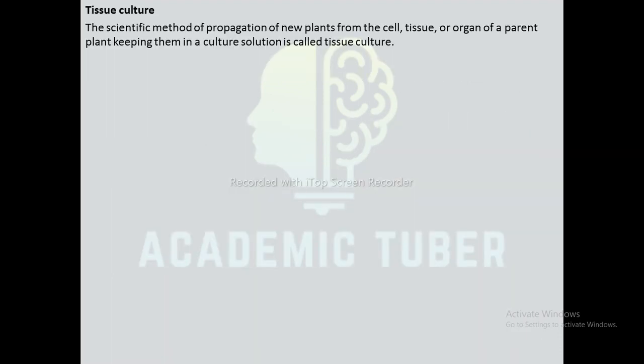Now we are going to discuss tissue culture. The scientific method of propagation of new plants from the cell, tissue, or organ of a parent plant kept in a culture solution is called tissue culture. It is the method of producing a number of plants in a culture medium under sterile conditions using small pieces of plant tissue. It is also known as micro-propagation. Mass production of plants with no seeds or non-viable seeds, production of identical plants with common features of size, color, and quality, production of disease-free plants, and production of mature plants in a short time are the major reasons for the widespread development of tissue culture.